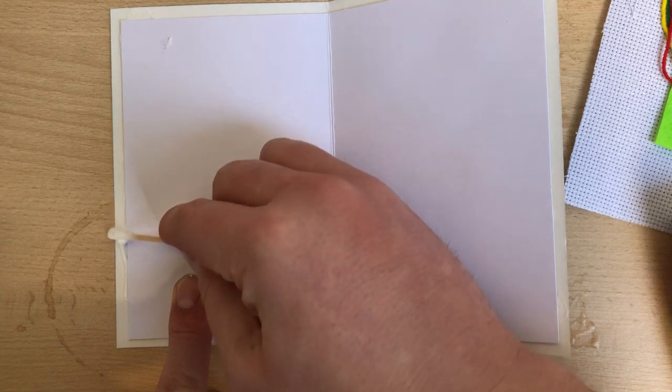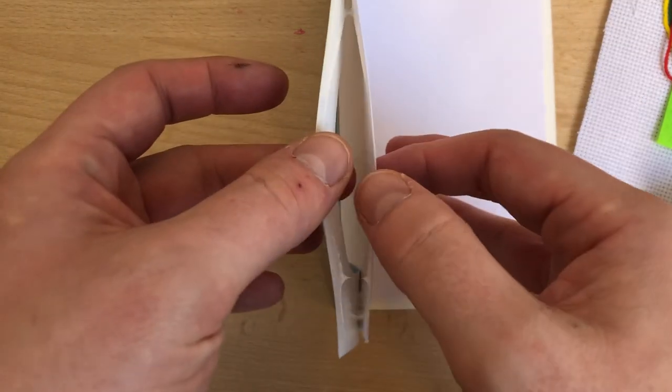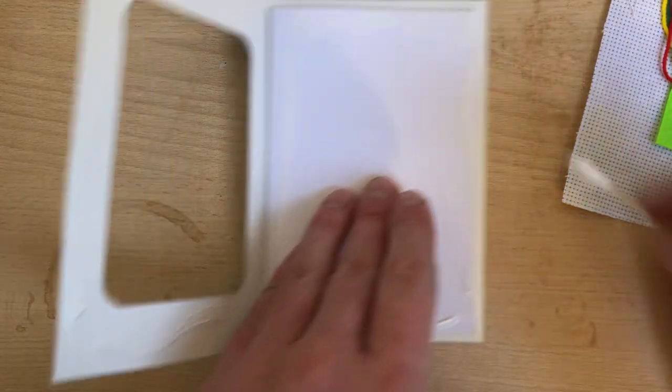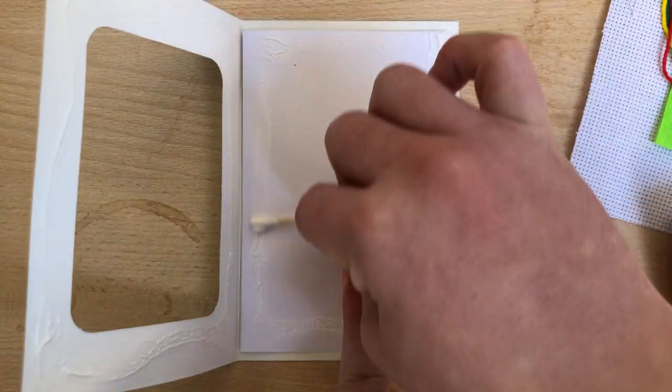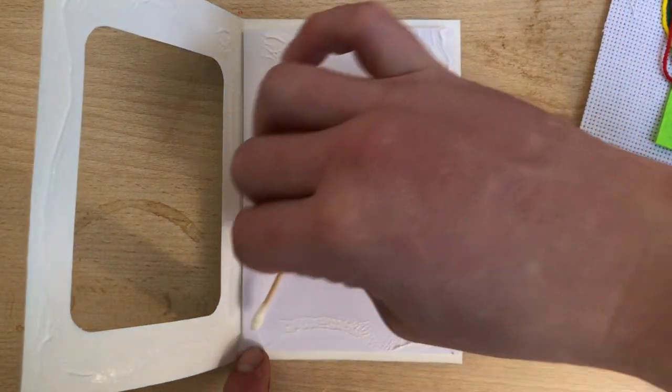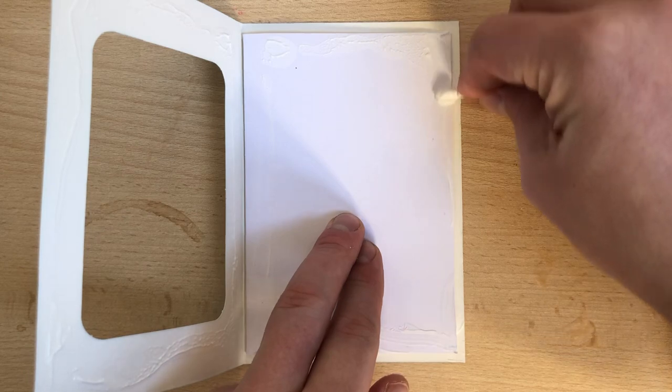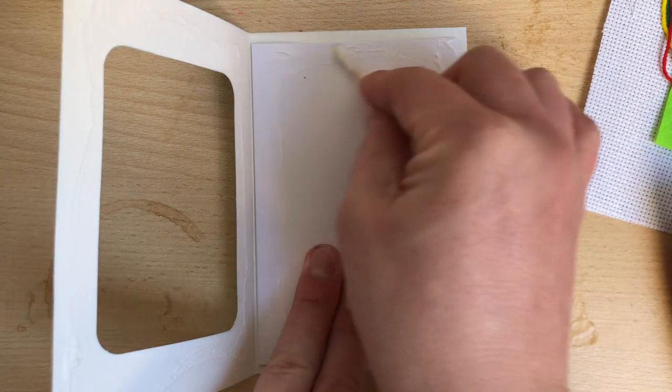I'm just going to use a cotton wool bud to take away some excess glue. I've done it again, haven't I? Who spots the mistake? I forgot to put the thing in. The cross stitch. I always forget the cross stitch has to go in first, doesn't it?